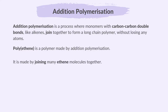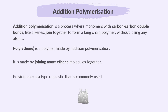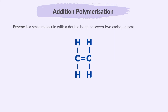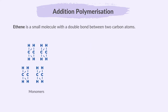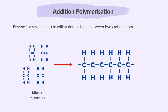Polyethene is made by joining many ethene molecules together and is a type of plastic that is commonly used. Ethene is a small molecule with a double bond between two carbon atoms. Since ethene is an alkene, ethene is the monomer.